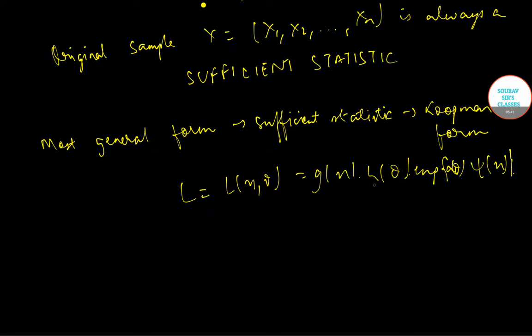Where h(theta) and A(theta) are functions of the parameter theta only, and g(x) and psi(x) are the functions of the sample observations only.